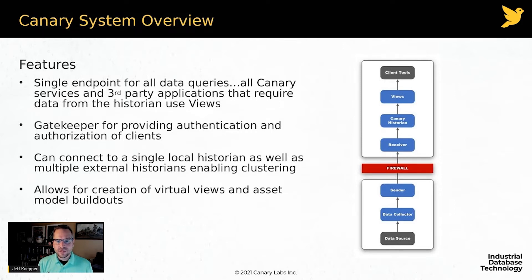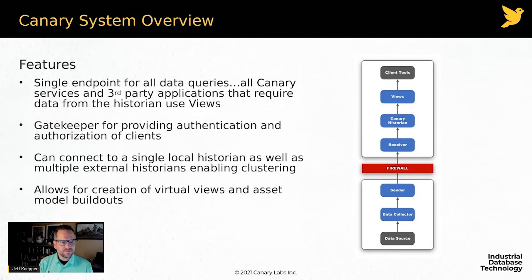You may recall from the last video that you can cluster multiple Canary historians. The historian server supports more than two million tags, but if you have four million tags you might want to stand two historians side by side. By pulling Views onto its own application server, I can connect to two, three, four, five, or more historians and create a cluster so that when making a query as a client, I don't see multiple historians — I just see one large archive.